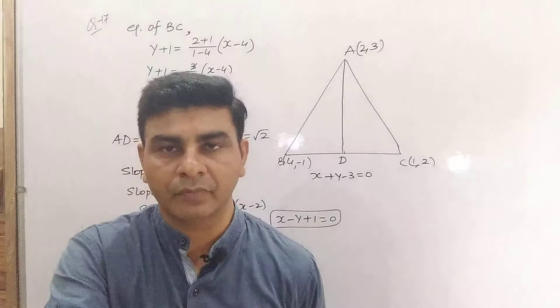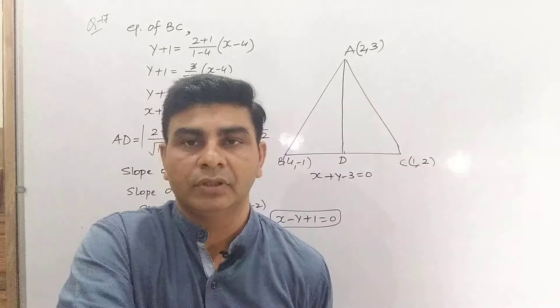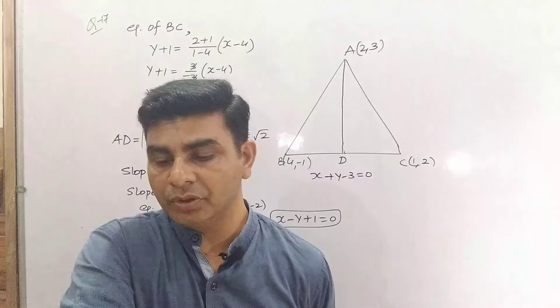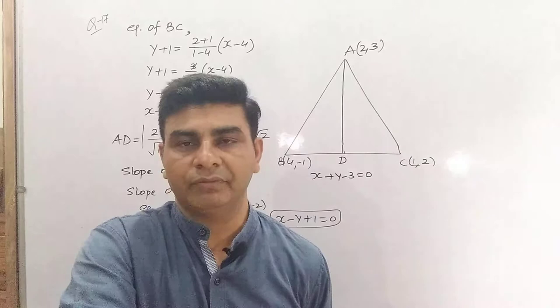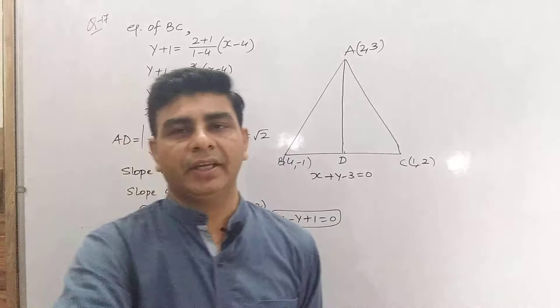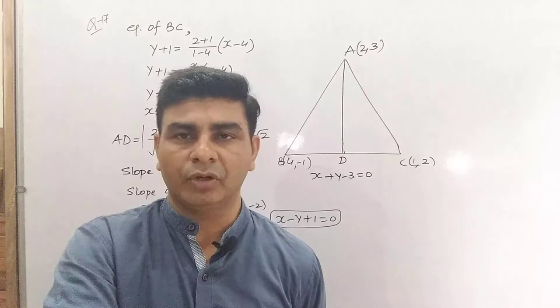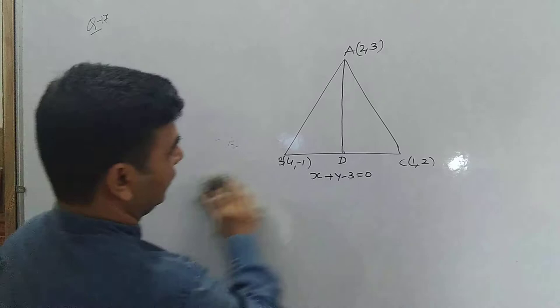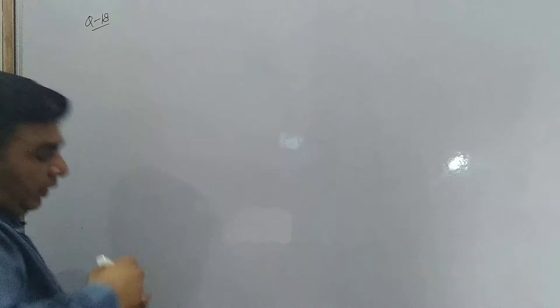Now let us do the last question of exercise 10.3: if p is the length of perpendicular from the origin to the line whose intercepts on the axes are a and b, then show that 1/p² = 1/a² + 1/b². The concept here involves finding the perpendicular distance from a point to a line using the formula ax₁ + by₁ + c over √(a² + b²). This is the last question of exercise 10.3.